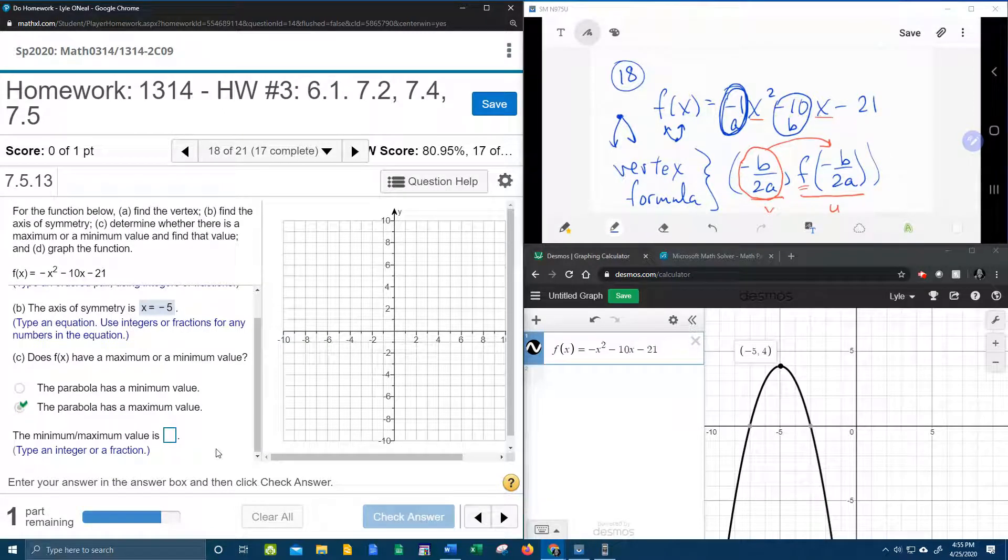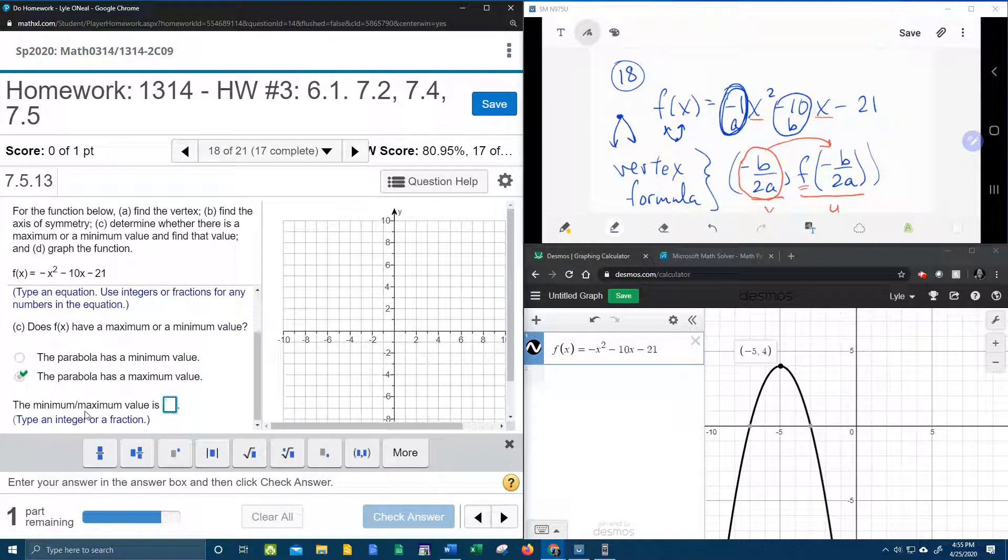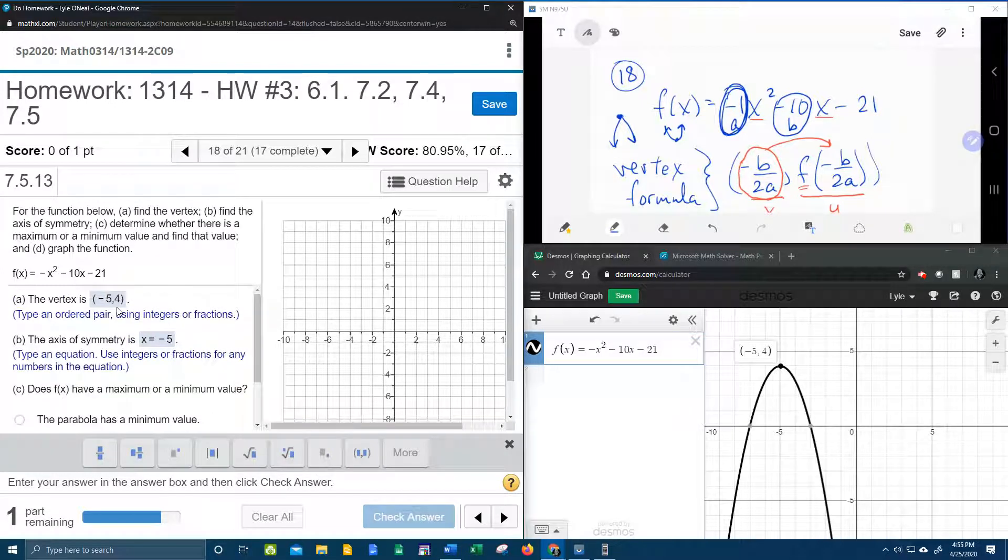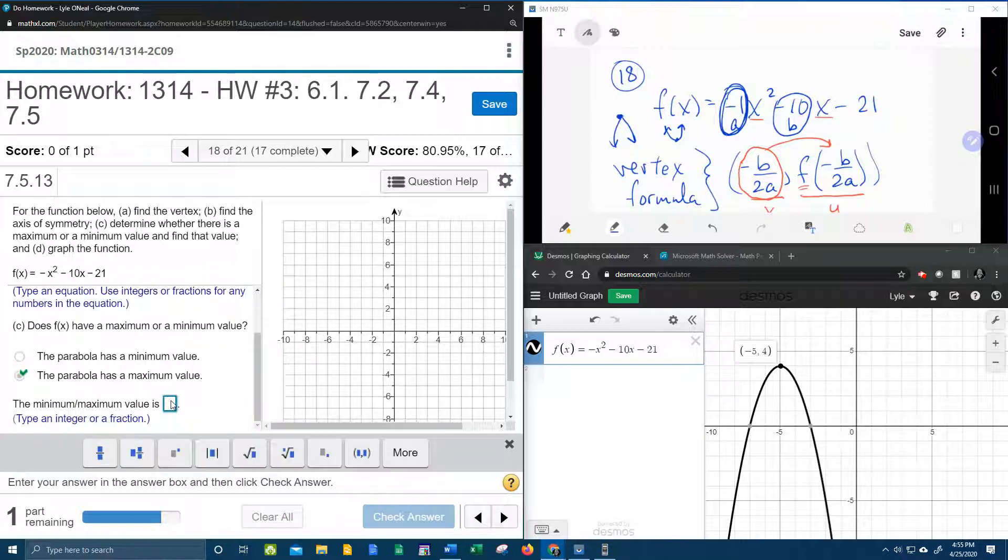And now what does it want me to do? Let's see here. Oh, the minimum or maximum value is. Now you need to know that that minimum or maximum value, if it says is, that is the y coordinate of the vertex. So that maximum value is going to be 4.